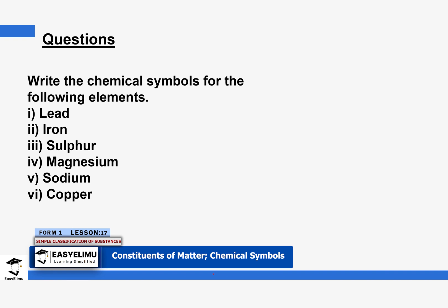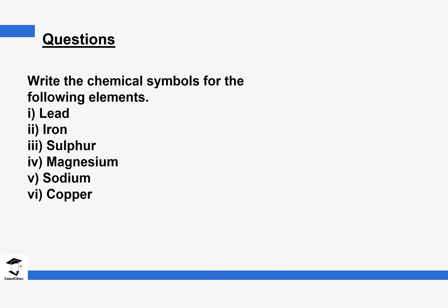Now let's look at a practice question: write the chemical symbols for the following elements. Lead is derived from the Latin name, so the symbol is Pb — capital P, small b. Iron is Fe — capital F, small e, from the Latin word Ferrum. Sulfur is derived from the English word with just the first letter: S. Magnesium is Mg — capital M, small g. Sodium is derived from the Latin word: Na. Copper is also Latin-derived: Cu.